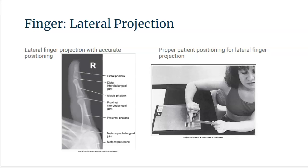The phalanges should not be foreshortened, the proximal interphalangeal joint is at the center of the exposure field, and the entire finger and metacarpal head are included within the exposure field.